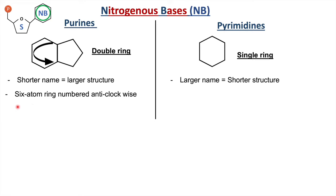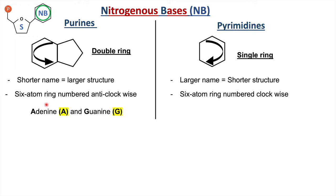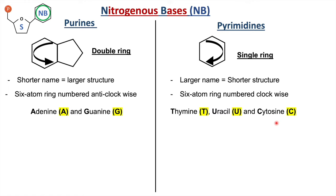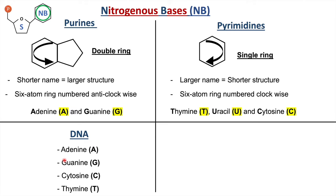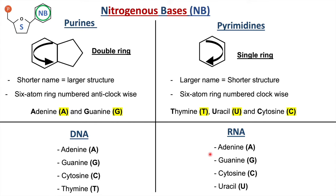Purines include adenine and guanine, whereas pyrimidines are thymine, uracil, and cytosine. DNA contains adenine, guanine, and thymine, whereas RNA contains adenine, guanine, cytosine, and uracil. The important difference is that DNA has thymine whereas RNA has uracil.